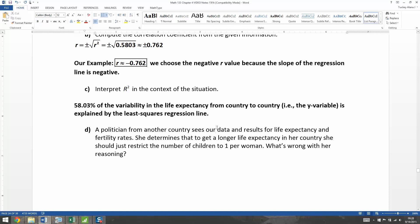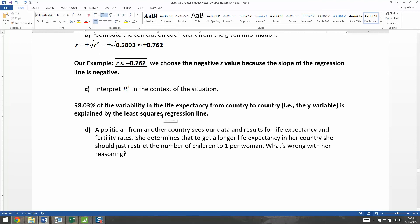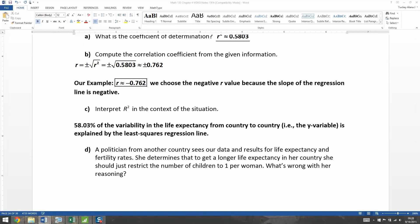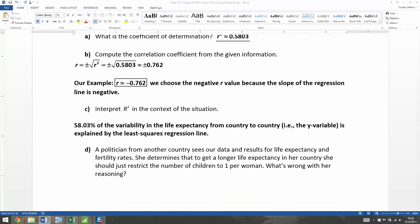Now, a politician from another country sees our data and results for life expectancy and fertility rates. She determines that to get a longer life expectancy in her country, she should just restrict the number of children to one child per woman. What's wrong with that reasoning? Well, she's acting like if she just restricts it, then automatically life expectancy will go up. In other words, she's assuming a correlation equals causation, assuming a causal relationship. And that's not true. What's happening here in 1962 is countries over on the left side have better health care. They're wealthier countries. They have more infrastructure. So they have a lower fertility rate and they have a higher life expectancy. Countries over here on the far right have a higher fertility rate, but they have a lower life expectancy because these are poor countries, countries where they don't have as much medicine or infrastructure. In other words, it's the infamous correlation is not causation.